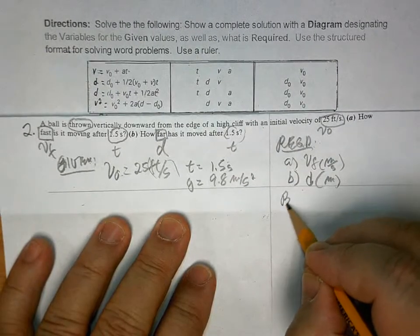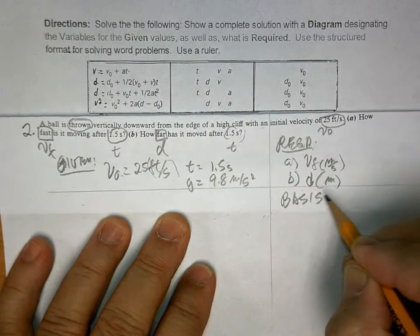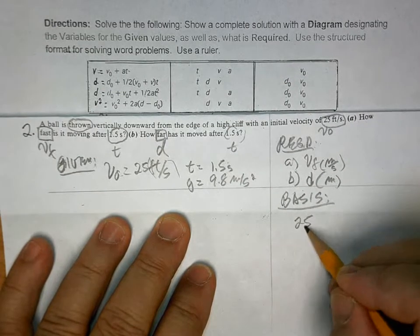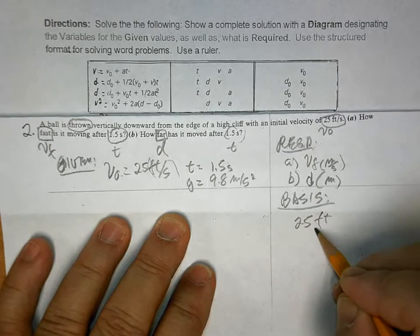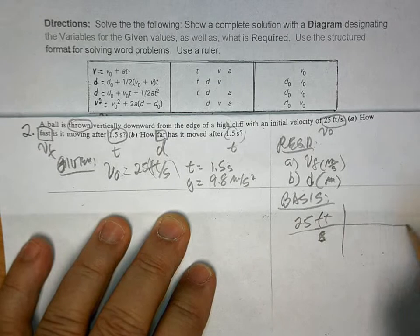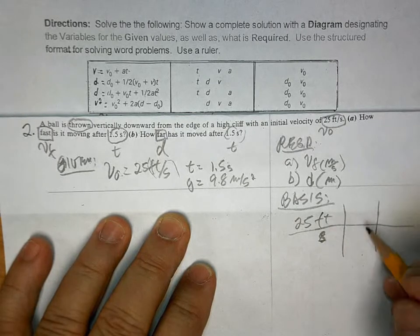All right. So, basis. First, you have to convert. So, what do we have? 25 feet per second. And how do you do that? You use your T charts. First,